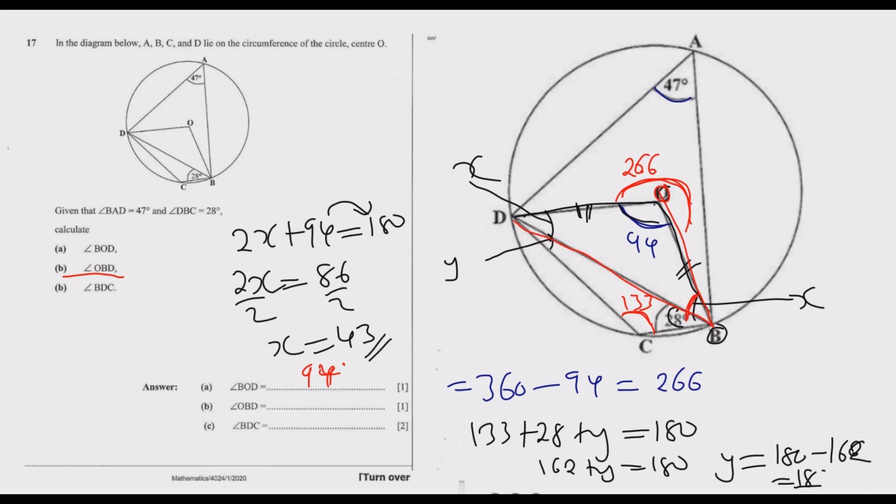Question (c): angle BDC—from B to D to C. This is the angle we found to be y, which is 18 degrees. This is how you deal with this kind of question.